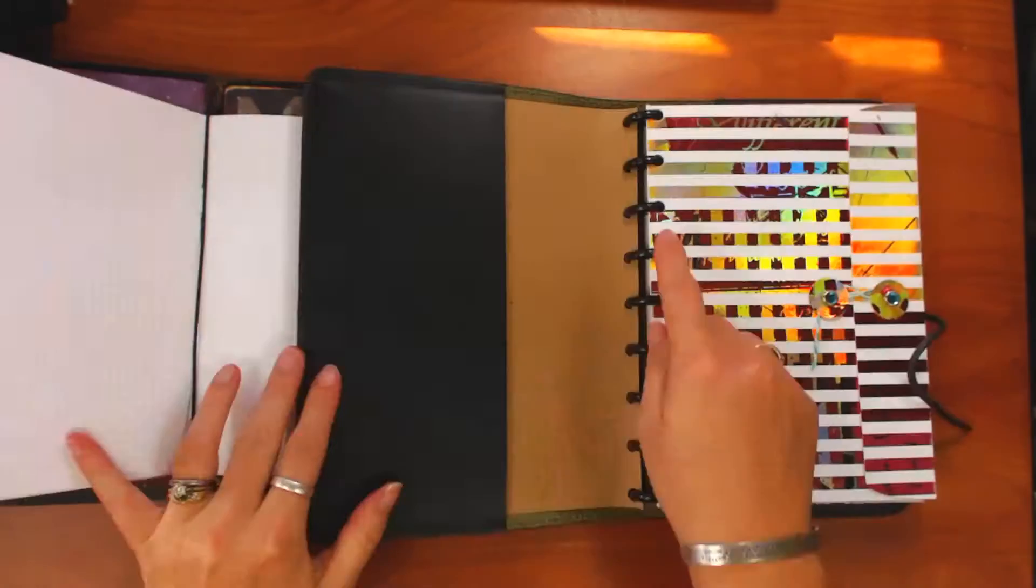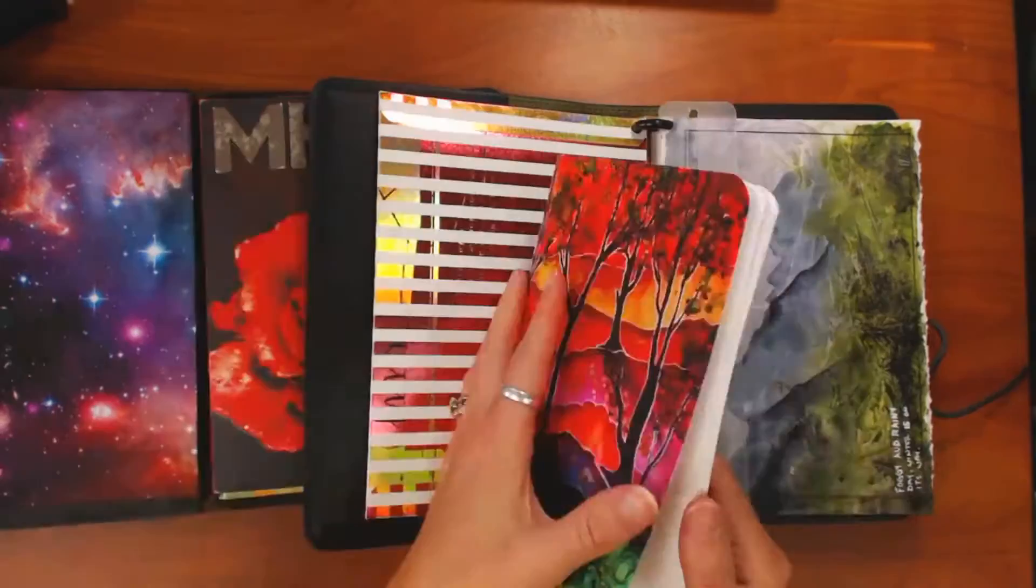In this example, I want to take this little notebook out of my Fedori, and I want to place it into my disk bound art journal without punching any holes.